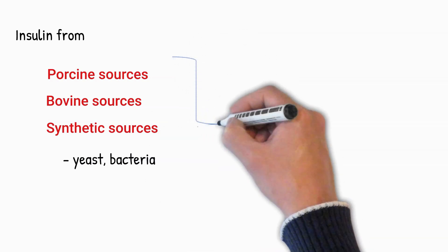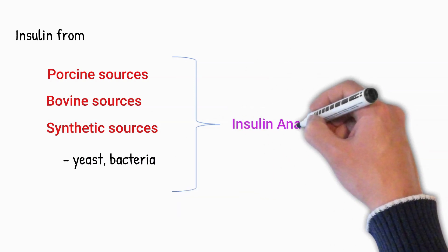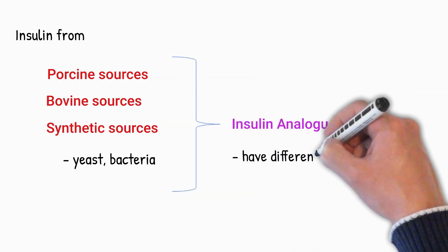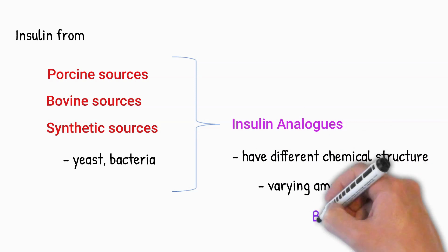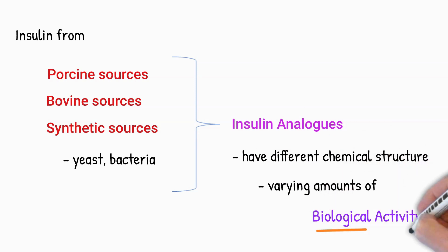These different insulins, called insulin analogues, have different chemical structures and therefore have varying amounts of biological activity. This means they all reduce blood glucose levels, but the intensity of the effect is different for each preparation. So, how do you decide the dose of insulin when you have multiple preparations with varying effects?